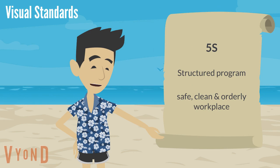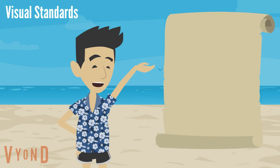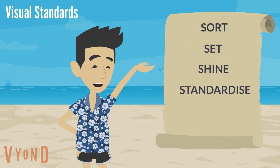Let me quickly explain 5S. This is a structured program to create a safe, clean, and orderly workplace. There are five stages: sort, set, shine, standardize, and sustain.